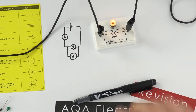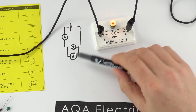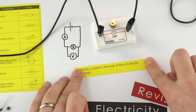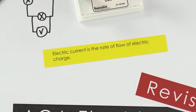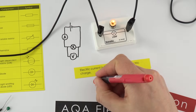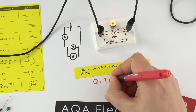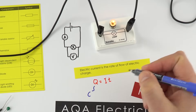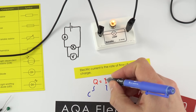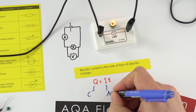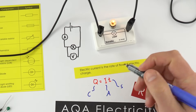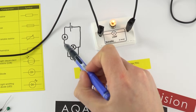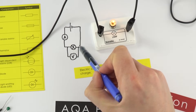We can think about the rate of flow of charged particles around the circuit — that's what is transferring the energy from the cell to the lamp. Electric current is the rate of flow of electric charge. One equation we use is Q = It. We use Q as the symbol for charge, measured in coulombs; I for current, measured in amps; and t for time, measured in seconds. In a DC circuit, the current is the flow of electrons in the wires.